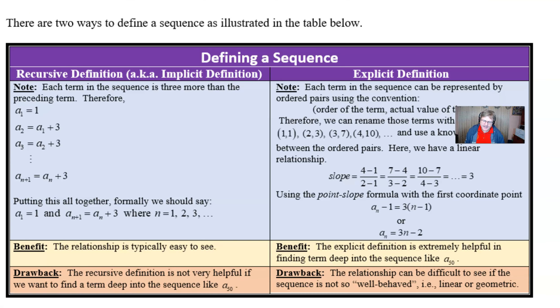Now, there are two ways to define a sequence, as you can see in this table. On the left side, we've got our good friend, the recursive definition. Sometimes we call that the implicit definition. And on the right side, we have the explicit. Let's look at the recursive definition. It says, note that each term in the sequence is three more than the preceding term. So if you refer back to our sequence,